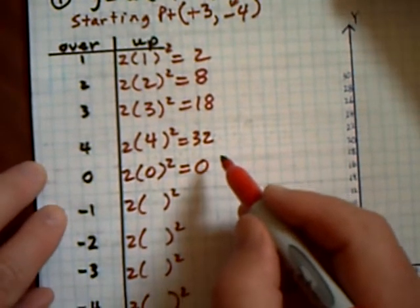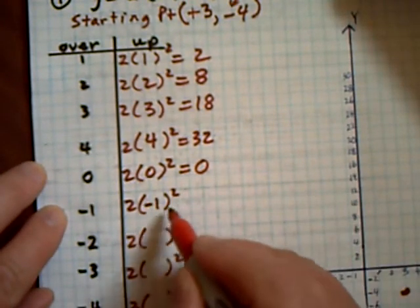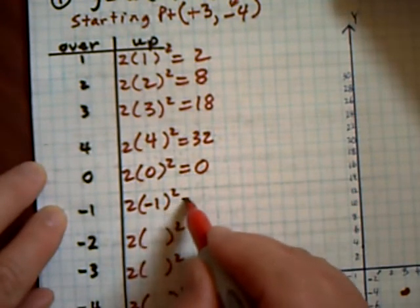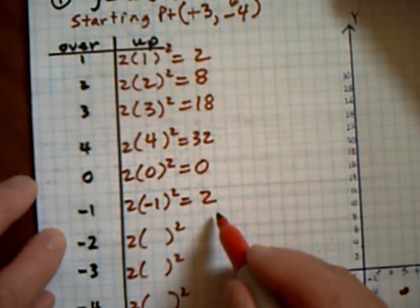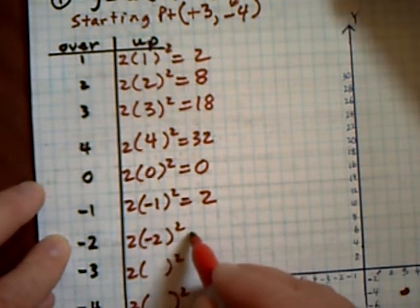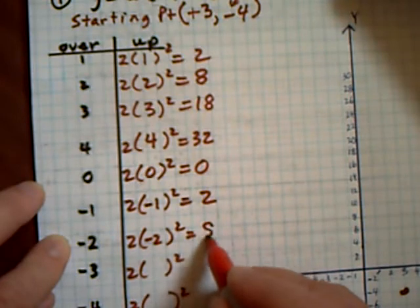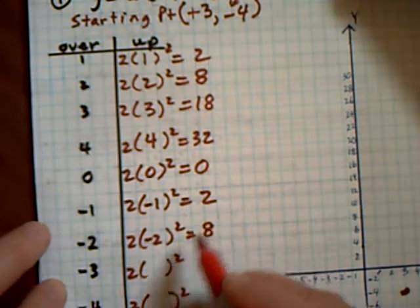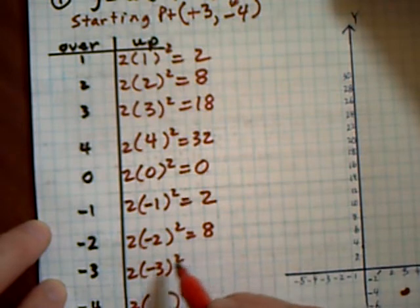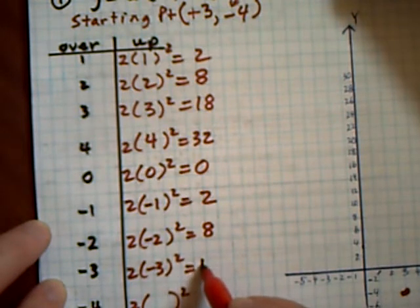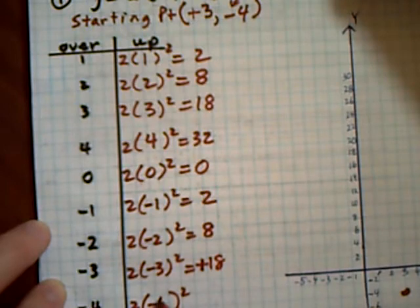If I go to the left 1, it's going to be 2 times negative 1 squared, which is still positive 1, so I'm still going to be going up 2. If I go to the left 2, I'll still be going up 8. If I go to the left 3, negative 3 squared is 9, and 2 times 9 is 18 — I'm still going up 18. And negative 4, I'll still go up 32.